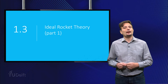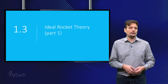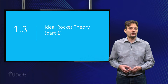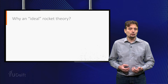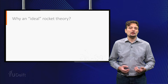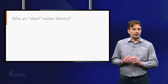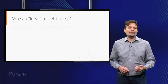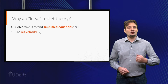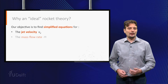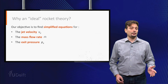In this video and in the next one, we will take a closer look at the assumptions, equations and implications of this model. What is the objective that we expect to achieve with the ideal rocket theory? We want to find equations for three important flow parameters: the jet velocity, the mass flow rate of propellant, and the exit pressure at which the propellant is expelled.